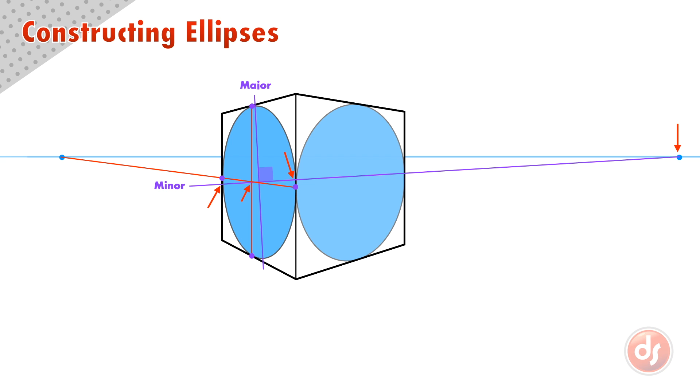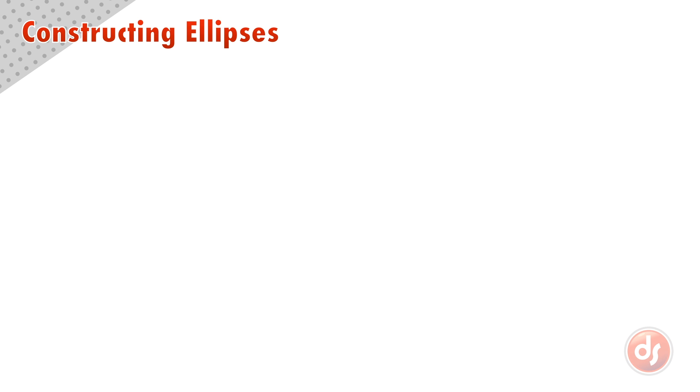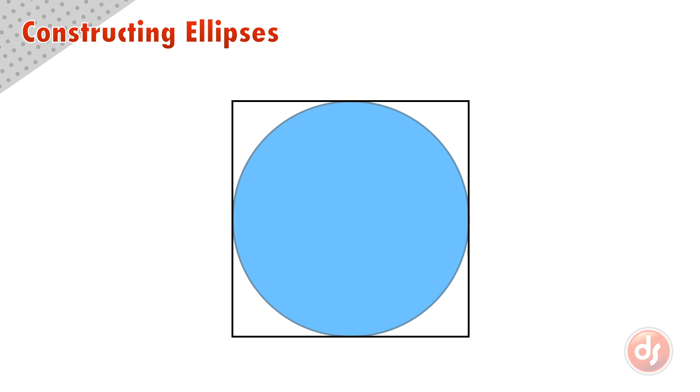The third technique might be the most visually confusing, but it will give us 12 total points our ellipse will touch, making it more accurate. Let's look again at the divisions on a flat circle.